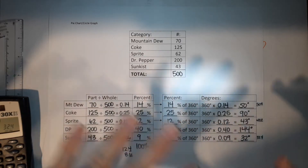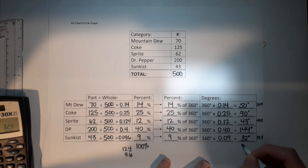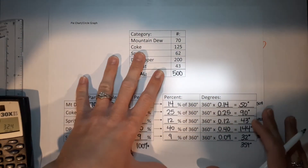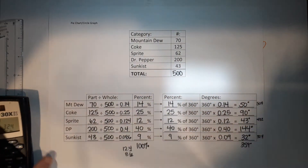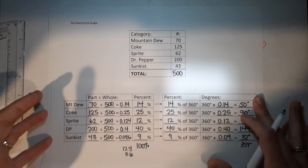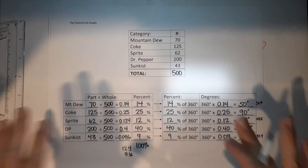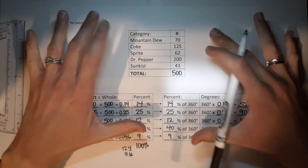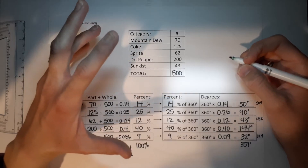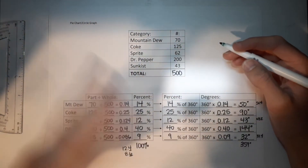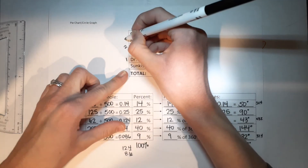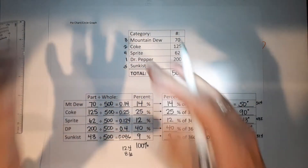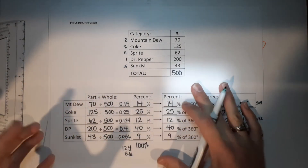Another check: add all the degrees — they should sum to 360. I get 359, which is fine because of rounding. As long as you get 359, 360, or 361, you're good. If you got something like 350, you'd need to recheck. A nice thing to do is order slices from biggest to smallest: Dr Pepper is 1st, Coke 2nd, Mountain Dew 3rd, Sprite 4th, Sunkissed 5th.